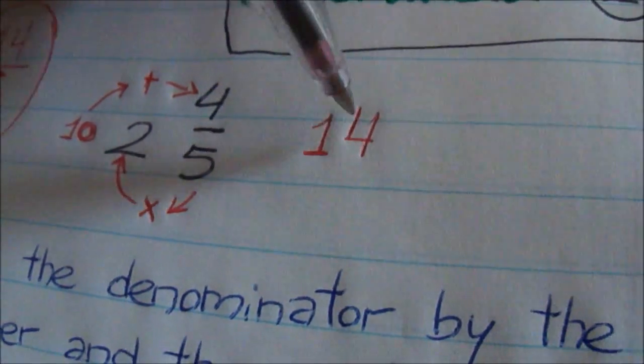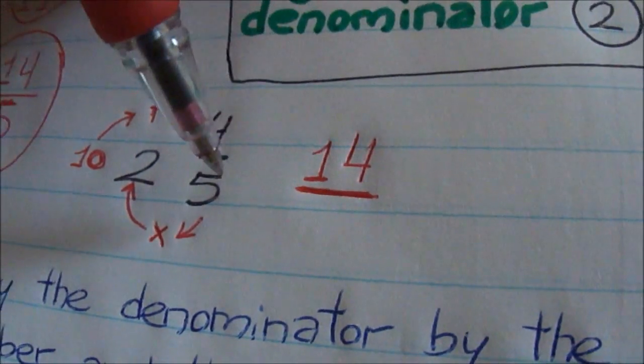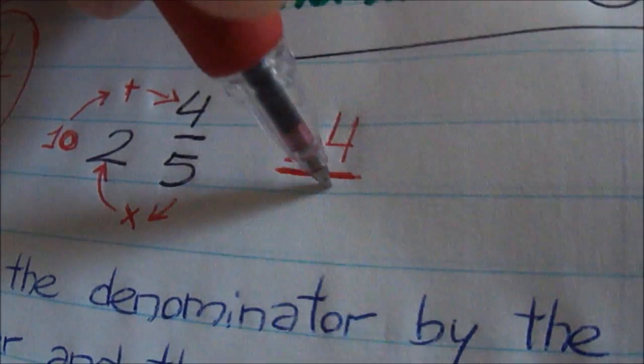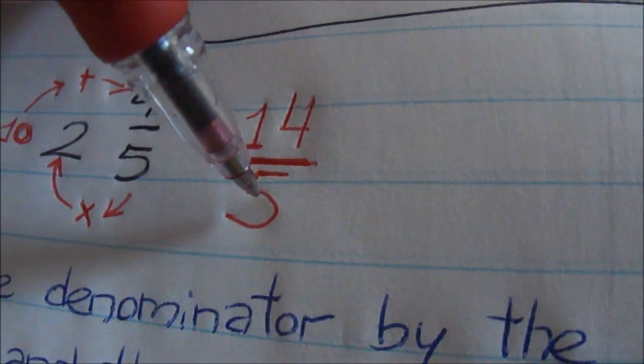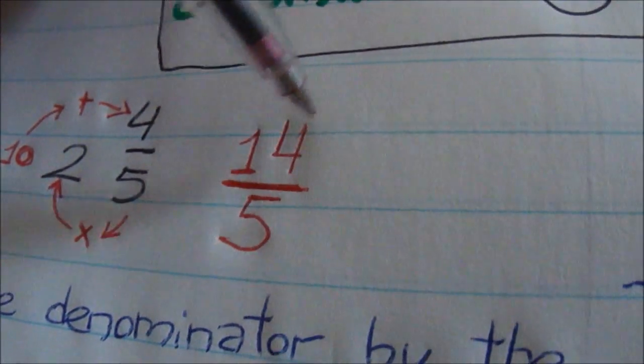So this mixed number turned into an improper fraction. Now, what happened with the denominator? It's going to stay the same. So just put it down there. See, numerator is bigger. The denominator is smaller. So that's an improper fraction.